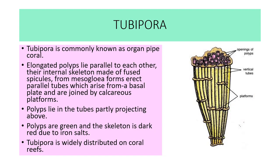First is Tubipora, commonly known as organ pipe coral. It is an elongated polyp lying parallel to each other, with their internal skeleton made up of fused spicules. From the mesoglia, erect parallel tubes arise from a basal plate and are joined by calcareous platforms. The polyps lie in the tubes, partly projecting above. The polyps are green and the skeleton is dark red due to iron salts. Tubipora is widely distributed on coral reefs.